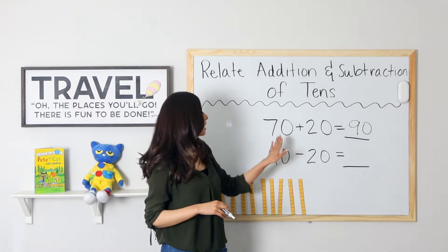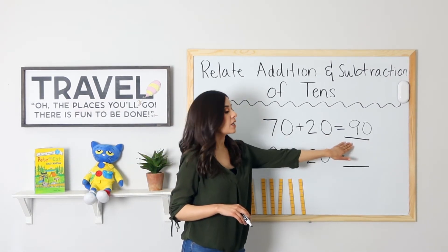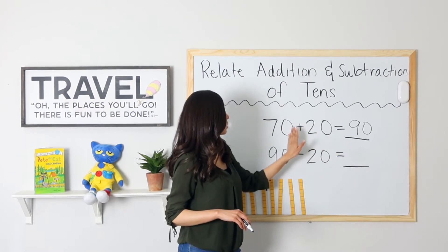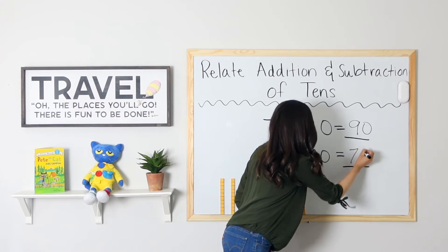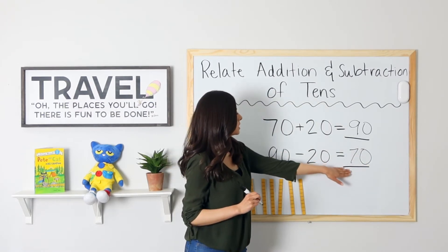If I know that 70 plus 20 equals 90, then I know that 90 minus 20 equals 70. 90 minus 20 equals 70.